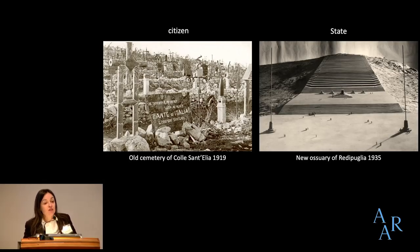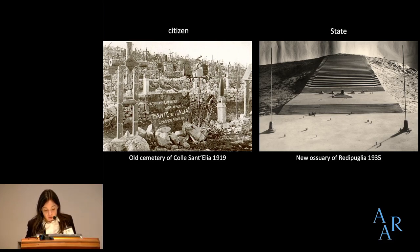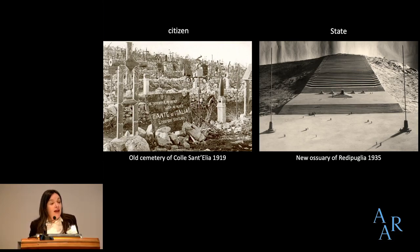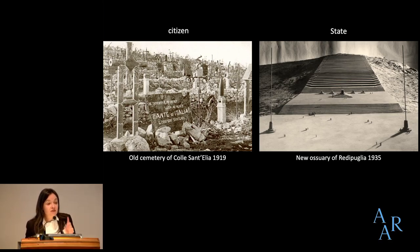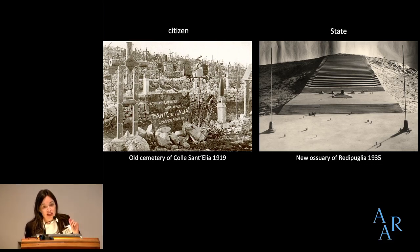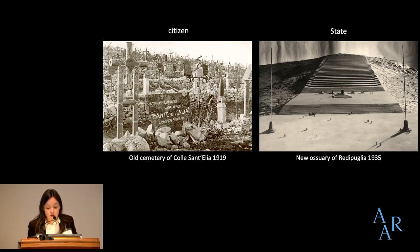The corpses were moved from Colle Sant'Elia to the new ossuary of Redipuglia. In the new ossuaries, rather than individual graves, the fallen are packed into a vast monument. The fascist authorities stated that the niches should be as homogenous as possible — they wanted the names of the dead written in black on a black background to give a sense of homogeneity, so there would be very little distinction between one set of bones and the next.